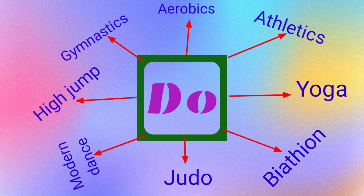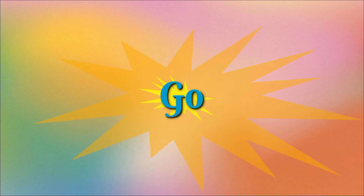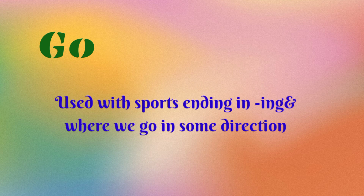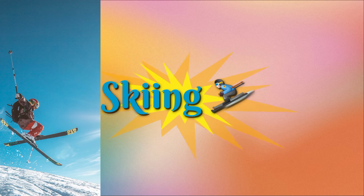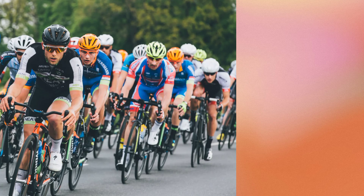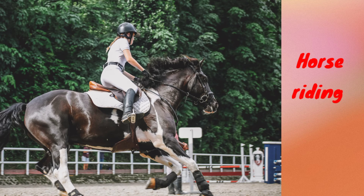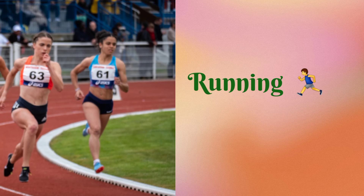And the third one is go. We use go with sports ending in -ing and where you go in some direction. It means the sports which end in the -ing form. So: skiing, sailing, cycling, skating, ice skating, to go skating, to go horse riding, to go surfing, to go climbing, to go bike riding. These are all used with go.